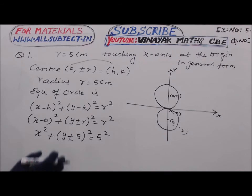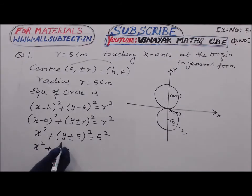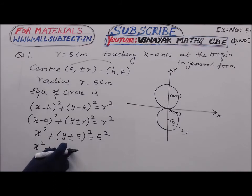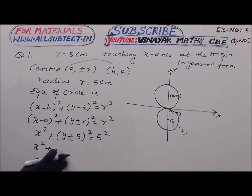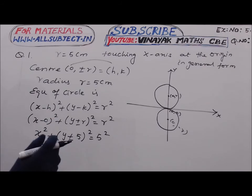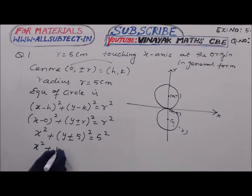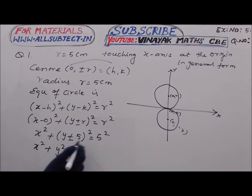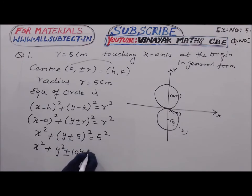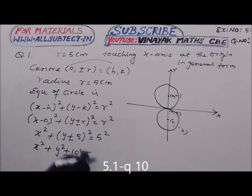Simplifying using (a + b)² and (a - b)² expansions, we get two different equations: x² + y² + 10y + 25 = 25 and x² + y² - 10y + 25 = 25, using 2ab = 10y with r = 5.